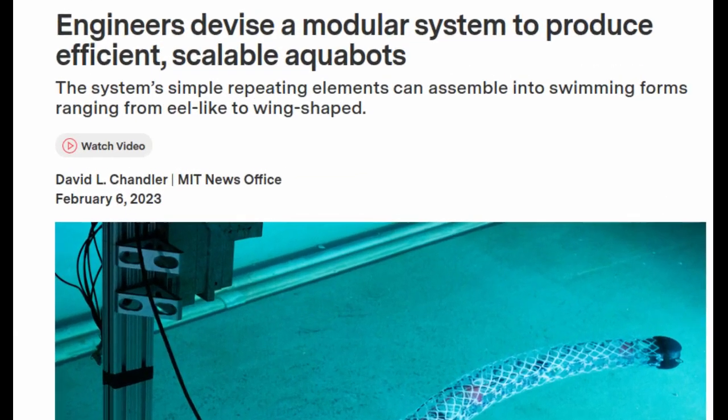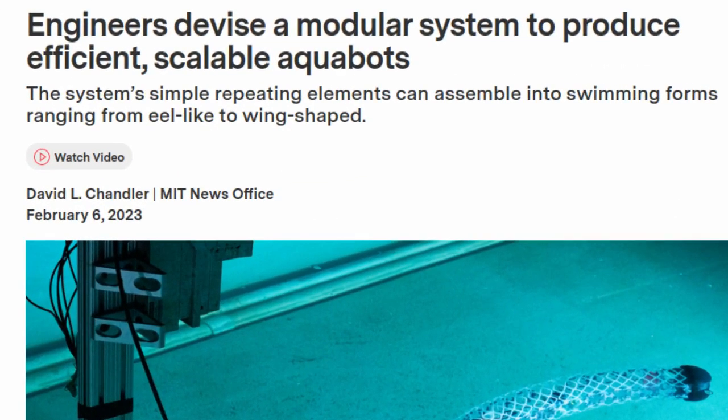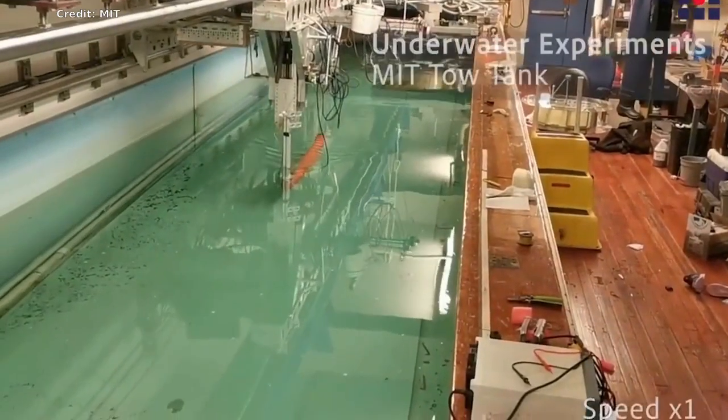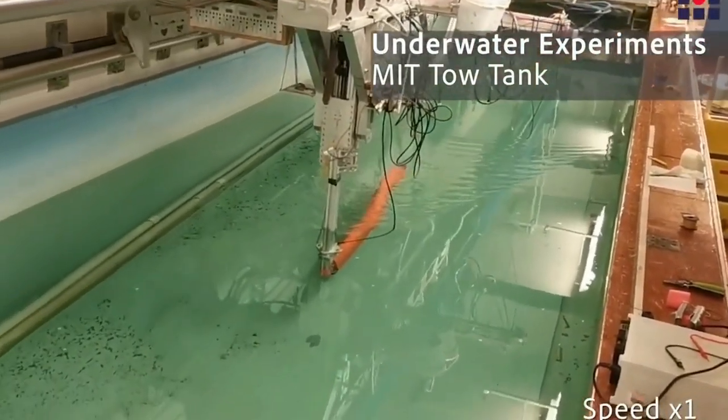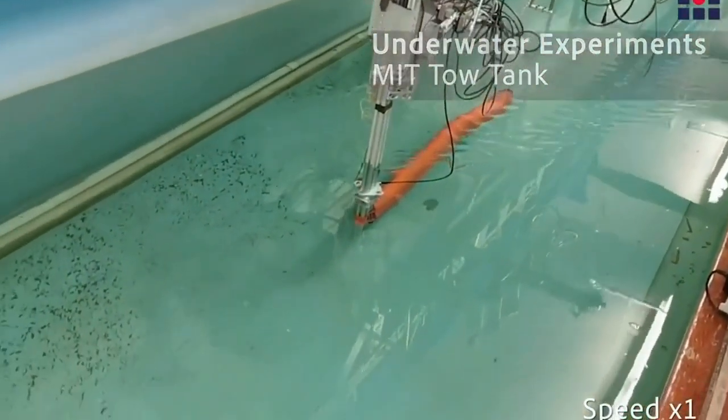Researchers have come up with an innovative approach to building deformable underwater robots using simple repeating substructures. Underwater structures that can change their shapes dynamically the way fish do push through water much more efficiently than conventional rigid hulls.